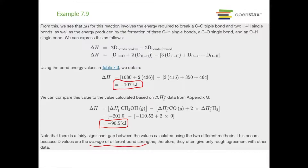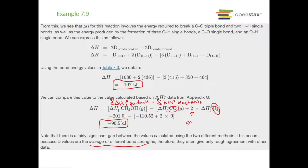We get rough agreement. Just a reminder: using the appendix G approach, delta H equals the sum of delta HF products minus the sum of delta HF reactants. So there's carbon monoxide and the hydrogens — you have to multiply the hydrogens times two because you have two of them in your balanced reaction. Good old stoichiometry.